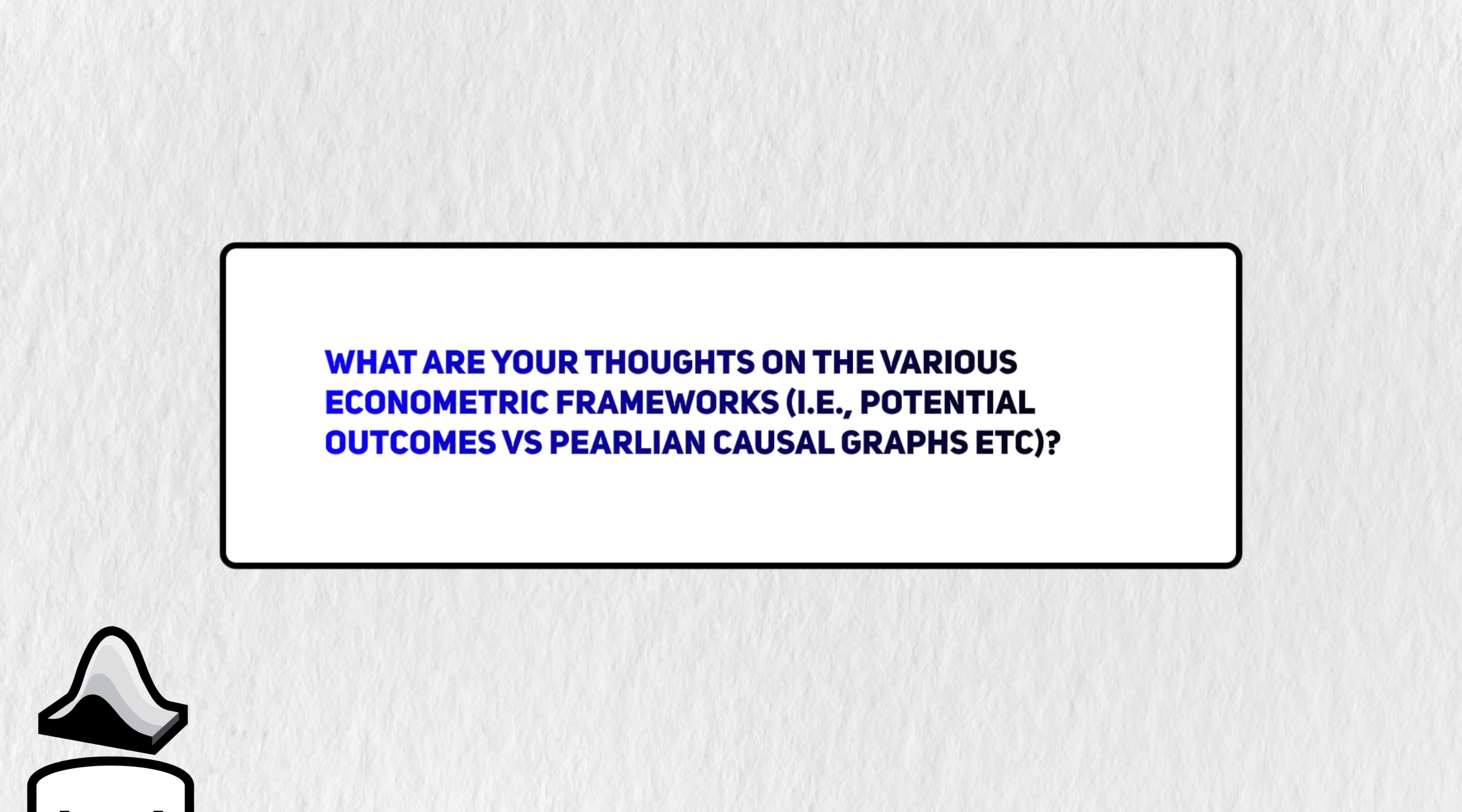What are your thoughts on the various econometric frameworks, i.e. potential frameworks vs. Perlian causal graphs? I've learned them before in a causal inference class, and they seemed okay. I think potential outcomes felt a little bit more intuitive to me.